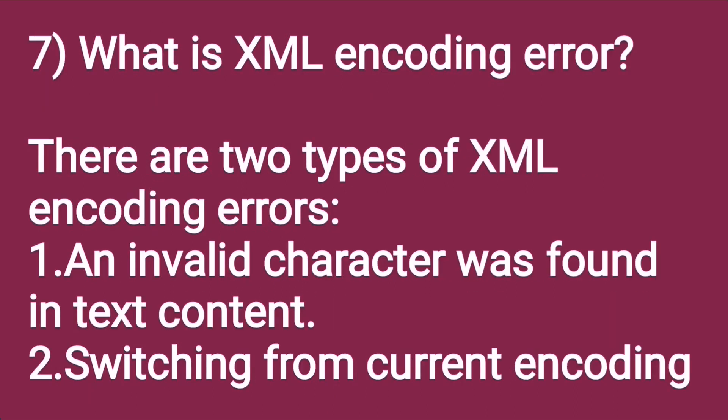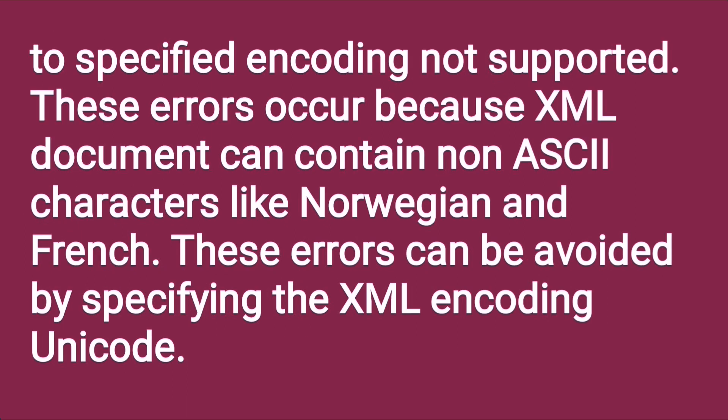What is an XML encoding error? There are two types of XML encoding errors. First: an invalid character was found in text content. Second: switching from current encoding to specified encoding is not supported. These errors occur because XML documents can contain non-ASCII characters like Norwegian and French. These errors can be avoided by specifying the XML encoding as Unicode.